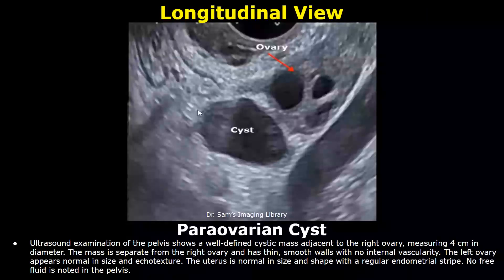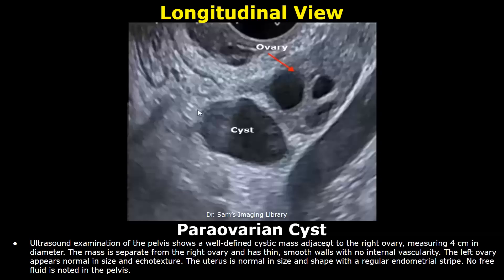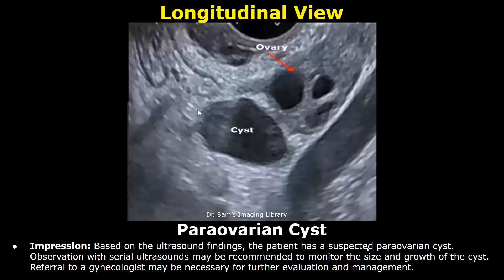This is a case of paraovarian cyst. In the findings, there is a well-defined cystic mass adjacent to the right ovary, measuring 4 cm in diameter. The mass is separate from the right ovary and has thin smooth walls with no internal vascularity. In the impression, the patient has a suspected paraovarian cyst. Observation with serial ultrasounds may be recommended to monitor the size and growth of the cyst. Referral to a gynecologist may be necessary for further evaluation and management.